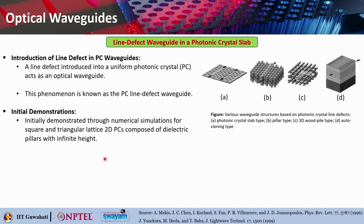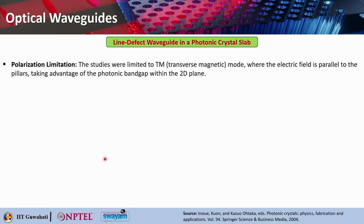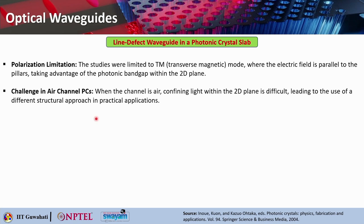Introducing this kind of line defect gives you photonic crystal line defect waveguides. Initially they were demonstrated through numerical simulations for square and triangular 2D photonic crystals composed of dielectric pillars with infinite height, since that is easy to simulate using 2D simulations. For the photonic crystal slab waveguide, studies showed polarization limitation — they were limited to TM (transverse magnetic) mode where the electric field is parallel to the pillars, taking advantage of the photonic band gap within the 2D plane. When the channel is air, confining light within the 2D plane becomes difficult, leading to different structural approaches for practical usage.